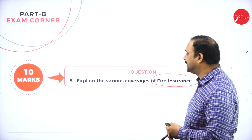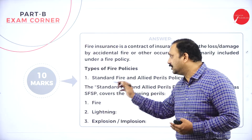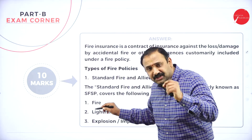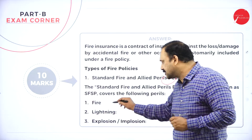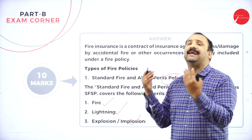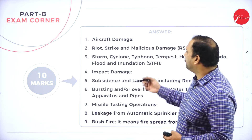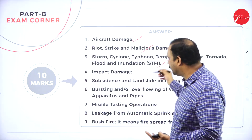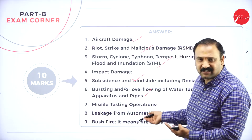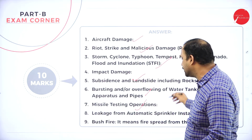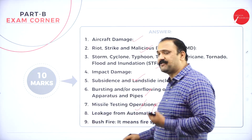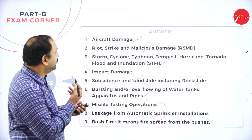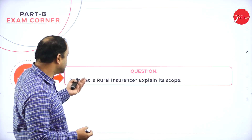The next question is: explain the various coverages of fire insurance. The types of fire policies are the standard fire policy and the allied perils policy. Under a standard fire policy, the insurance covers damage caused by fire, lightning, explosion or implosion, external factors, aircraft damage, riot, strike, malicious damage, storm, cyclone, typhoon, tempest, impact damages, subsidence, landslide, bursting or overflowing of water tanks, missile testing operations, leakage from automatic sprinklers, and bushfire.